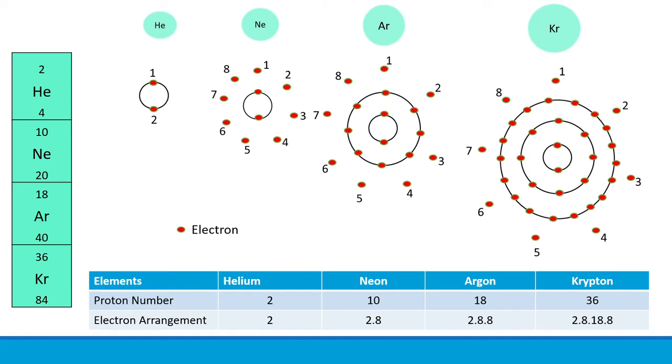Let's have a look at their electron arrangement in helium, neon, argon and krypton. The proton number indicates electron numbers of these elements and are stated in the table below. If you notice, these elements have full electron arrangement in their outermost shell.